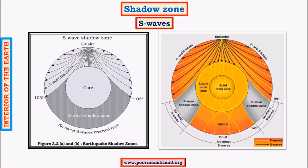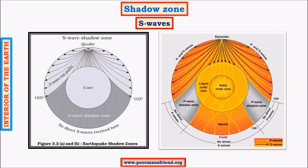Now let us look at the most important concept: shadow zones. First we look at the shadow zone of S waves, which are more important for explaining the earth's interior. If earth were a homogeneous medium throughout, earthquake waves from any point would reach all other places. But in reality, when an earthquake happens, there is about 40% of the region on the other side of the earth where S waves are absent.